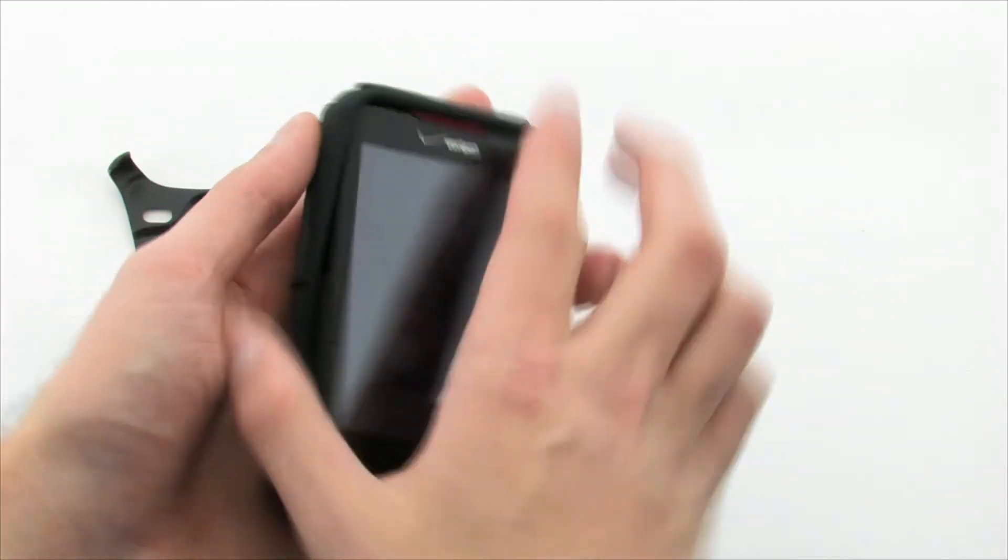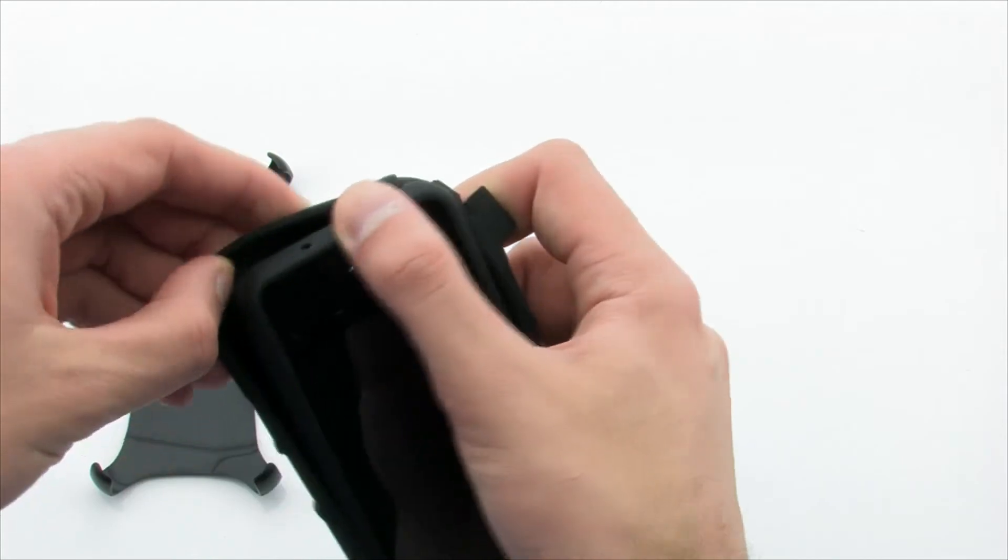The next step is to install the inner silicon layer by sliding the top of the device into the skin and pulling the corners over the bottom.